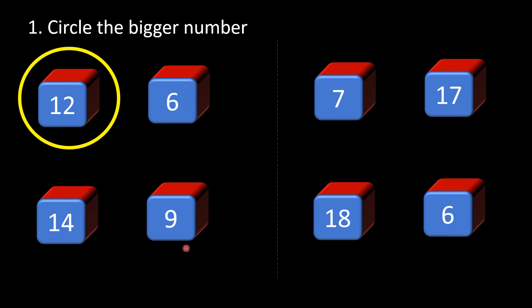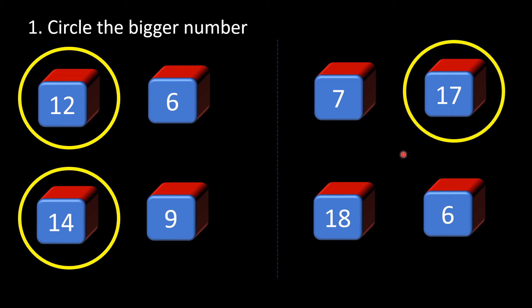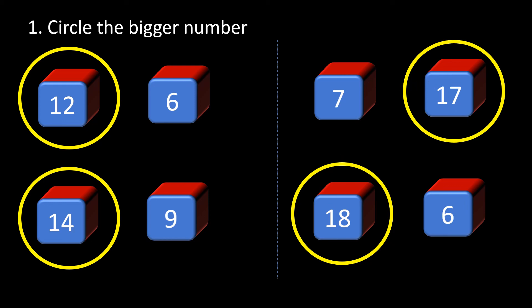Next: 14 and 9 — which one? Correct, it's 14. Next is 7 or 17? It's 17, that's right. And again 18 or 6? You guessed it right, it's 18. Good job, guys! I am sure now you all know how to identify a bigger number.